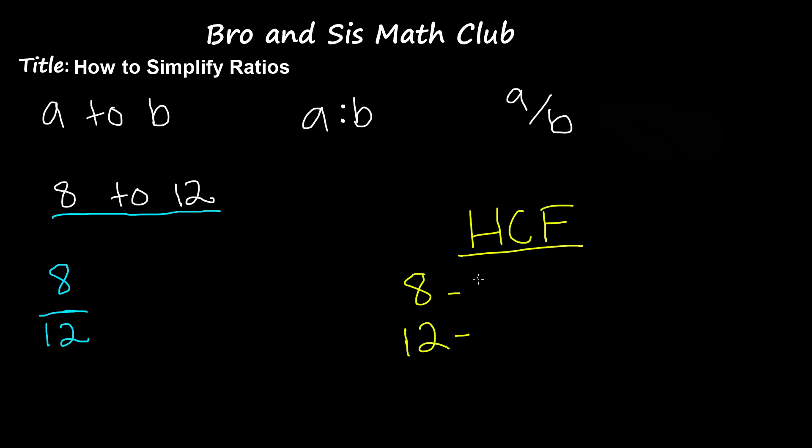Factors for number 8 would be 1, 2, 4, and 8. Factors for number 12 would be 1, 2, 3, 4, 6, and 12.